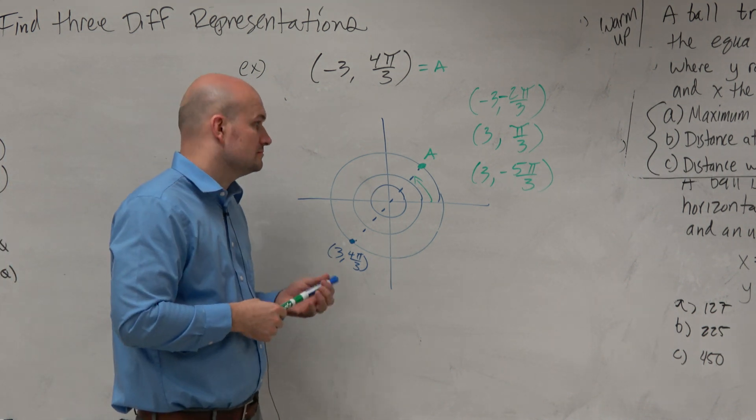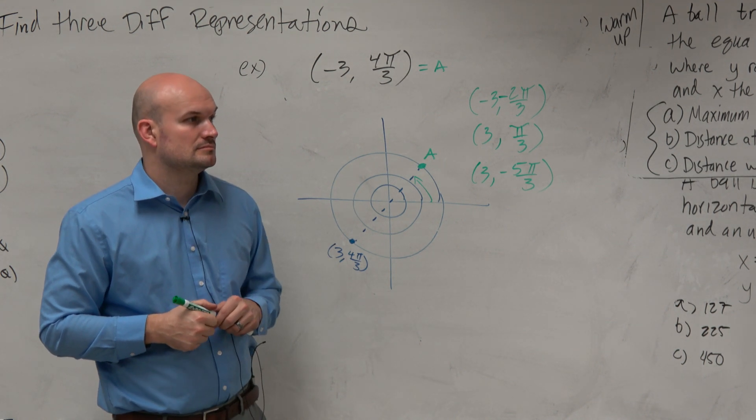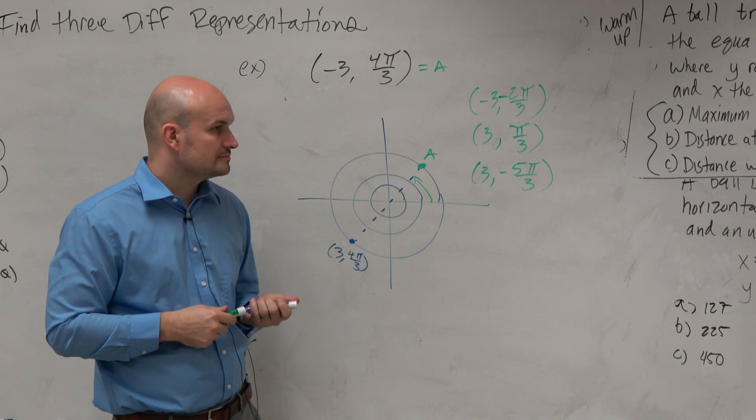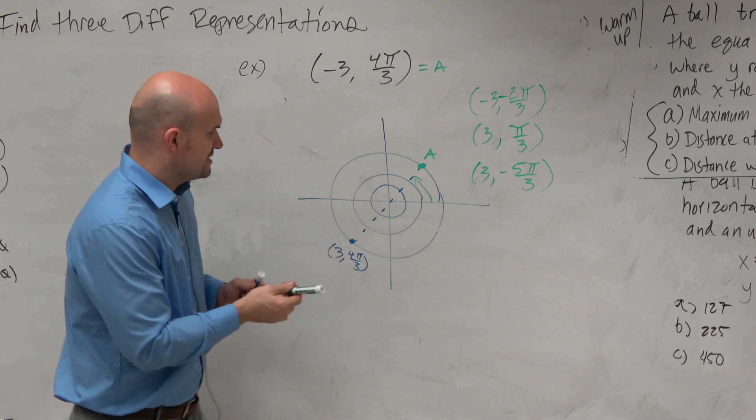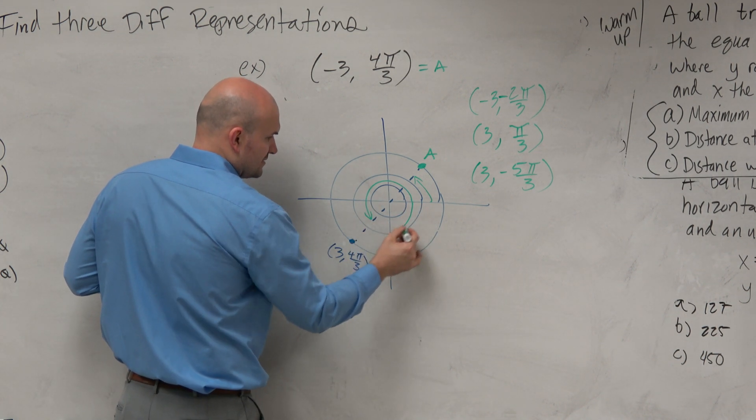Student: So I just don't understand why you would use the positive or negative. Instructor: It's just a reflection. Student: I understand that, but how did you get to the first angle? I just, instead of doing this angle, I did this angle.